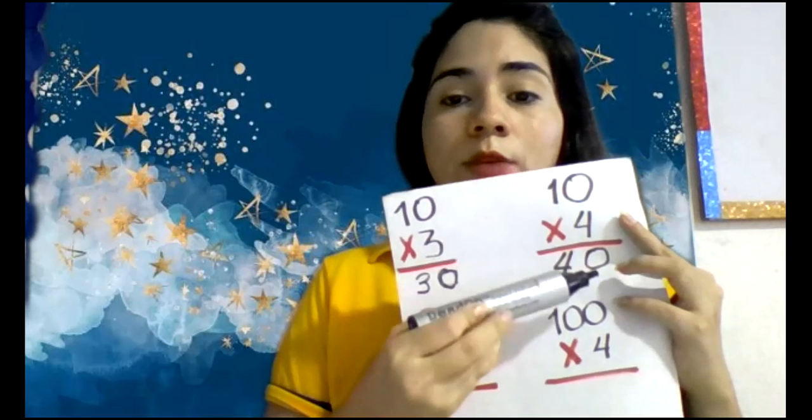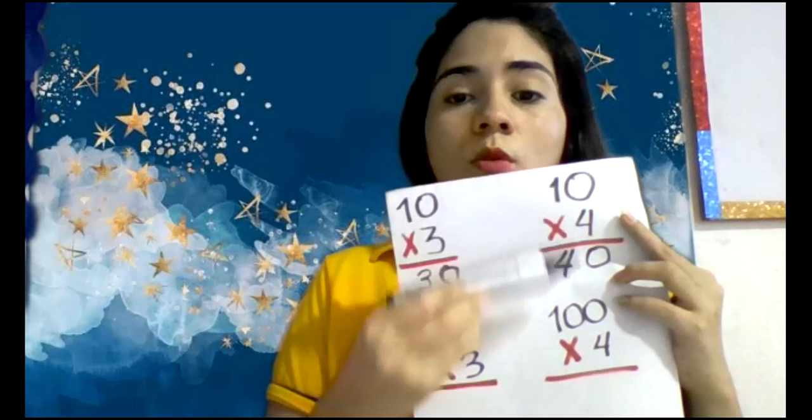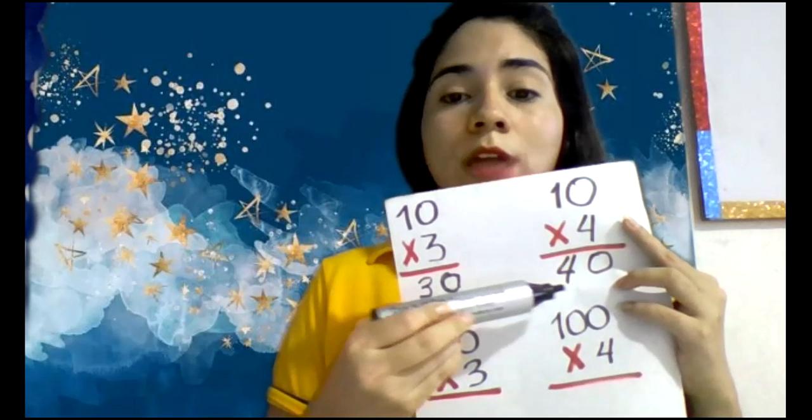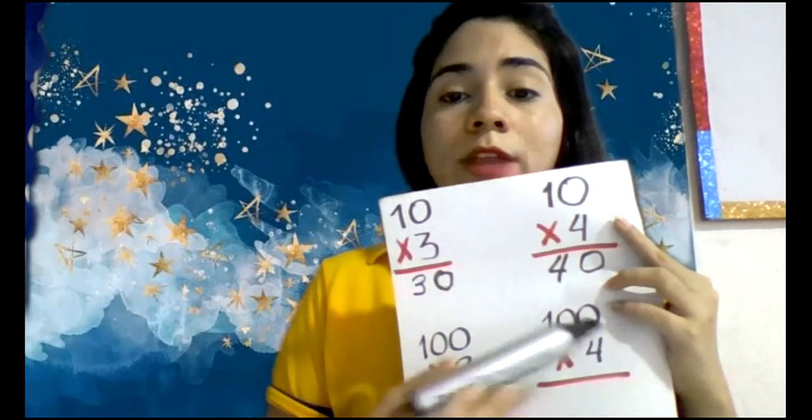4 por 0, cero. 4 por 1, cuatro. ¿Cuál es el resultado? 40, chicos. Estos 30 y 40 son ejemplos de múltiplos.